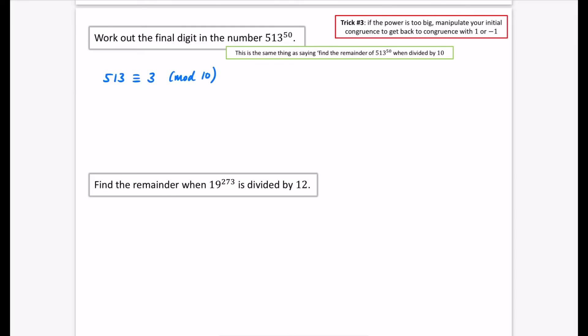Think about powers of 3. Can you do something with a power of 3 to get close to a multiple of 10 — either 1 above or 1 below? The answer is: 3 squared is 9, which is congruent to minus 1 mod 10, because 9 plus 1 is 10. So we've now got that 3 squared is congruent to minus 1 mod 10.